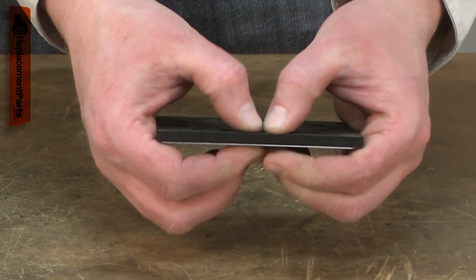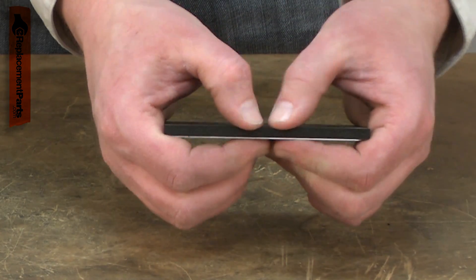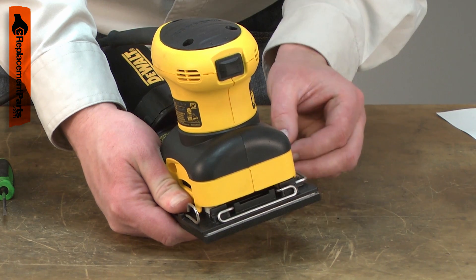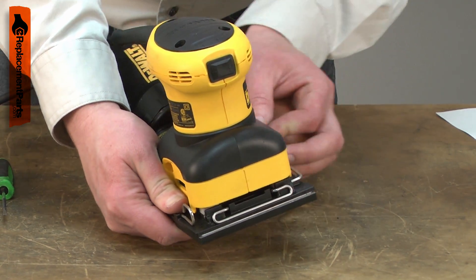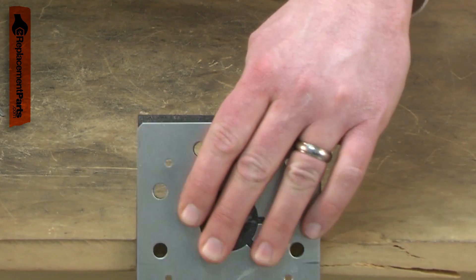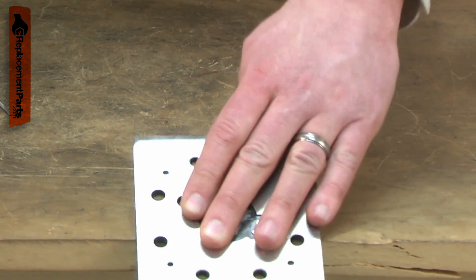The sander pad and backing plate consists of a steel plate with a foam pad adhered to it. The foam pad provides grip to the sandpaper which helps it to stay firmly attached within the clamps. The foam also has a little give so the pad can conform to a slightly rounded edge.